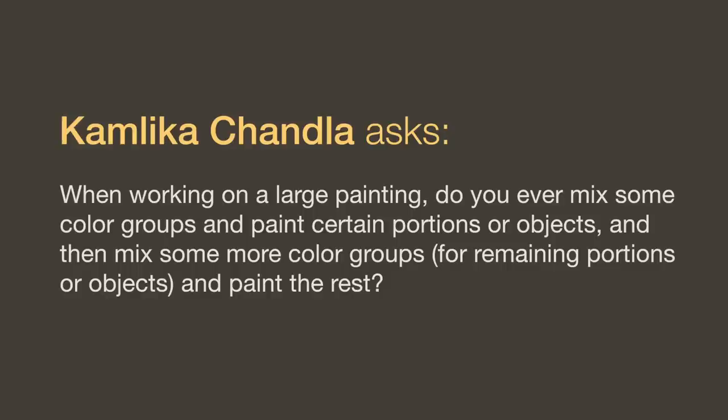When working on a large painting, do you ever mix some color groups, paint certain portions, then mix more color groups for remaining portions? Absolutely. When I was painting large full-length portraits, I would always start with the face but always paint a little bit of background around whatever object I was painting. That way, if it dries and you come back to it, you can blend into that background rather than into their hair or shirt. Because if you paint a shoulder and it dries hard, then bring background right up to the shirt, you'll get a hard line — it won't be the same as working wet into wet.